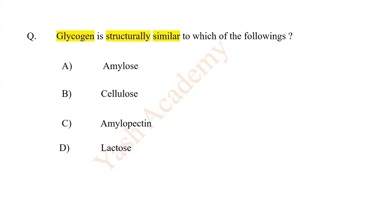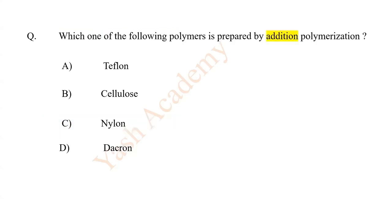Glycogen is structurally similar to which of the following? The answer is D: amylopectin. Which one of the following polymers is prepared by addition polymerization?